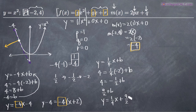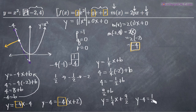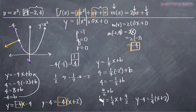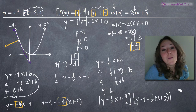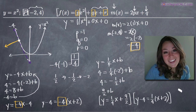In point-slope form, the normal line is y minus 4 equals (1/4) times (x plus 2). Both forms represent the same line. So we have the slope-intercept form and the point-slope form for the equation of the normal line. That's it — I hope that video helped, and I'll see you in the next one.